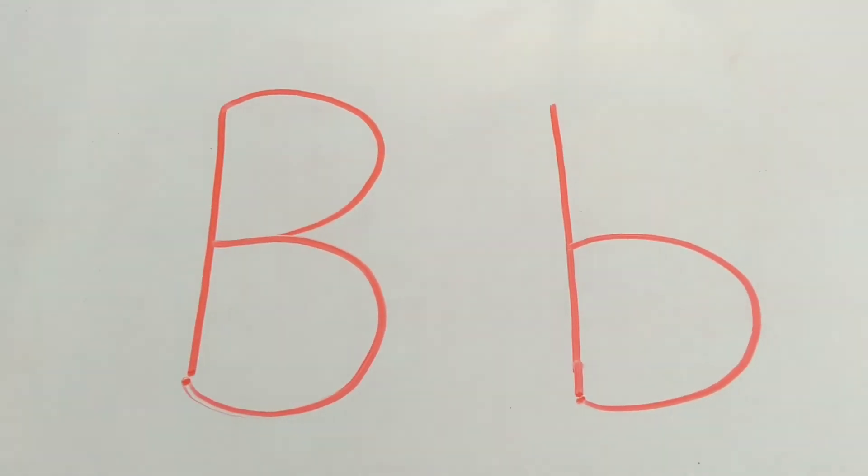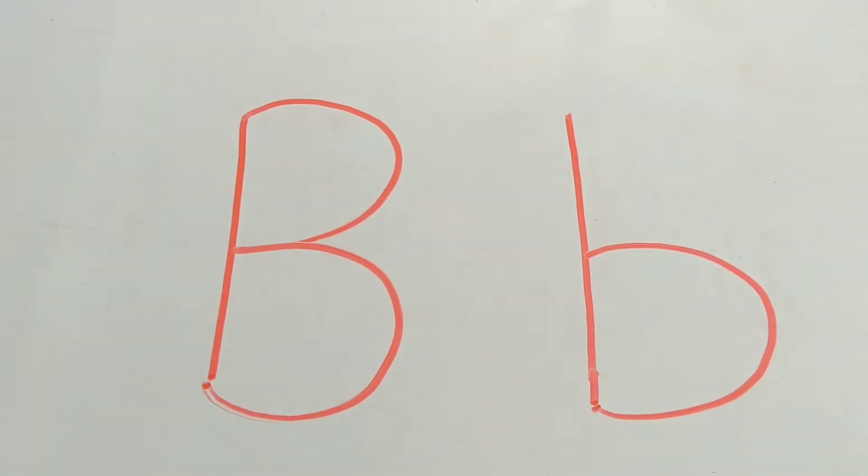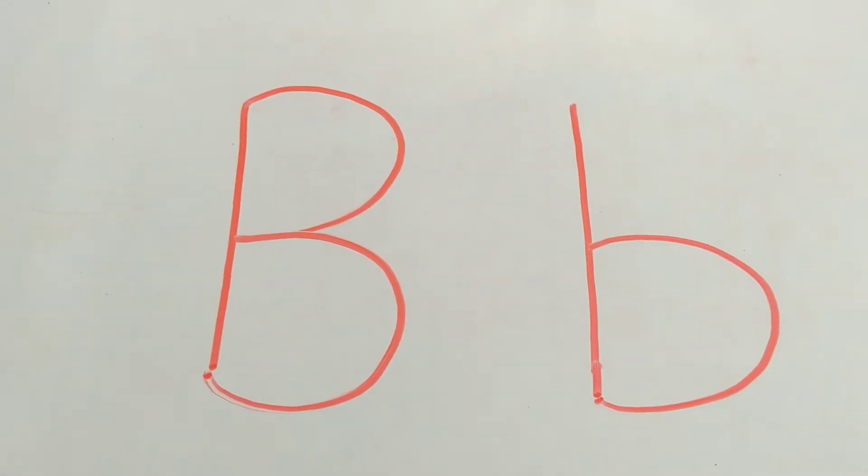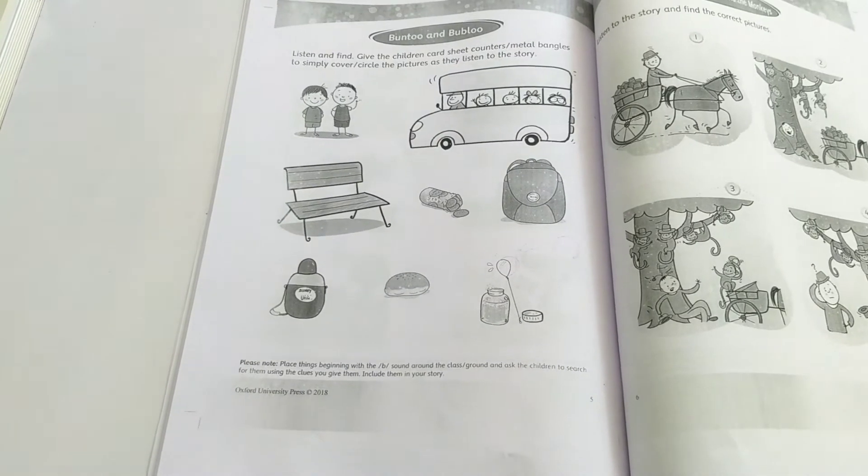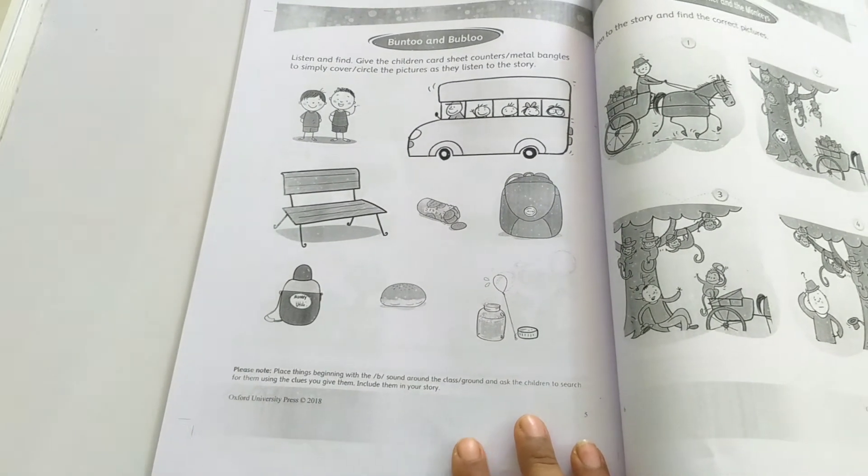B for ball, B for boy, B for bird, B for bat, and B for bus. Move to page number 5 of the story section.